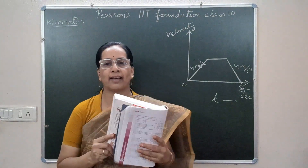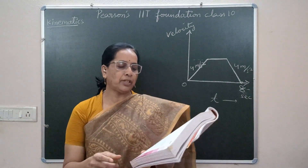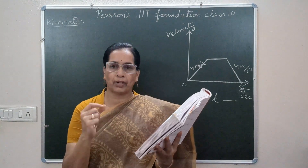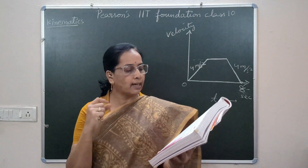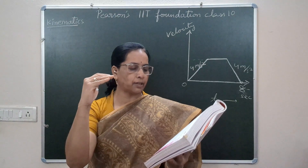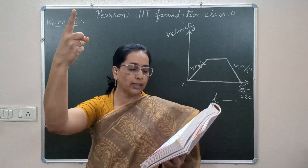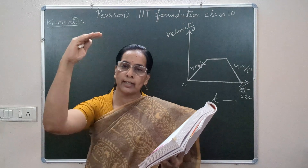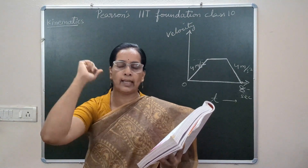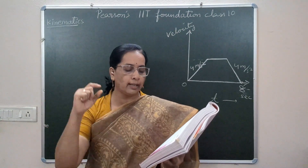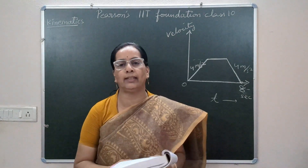In this video, I am answering question number 41 from the Pearson Class 10th IIT Foundation Physics Kinematics chapter, level 2. The question will be typed in the description box. The question says: a lift ascends from rest with uniform acceleration of 4 meter per second square, then moves with uniform velocity, and finally comes to rest with a uniform retardation of 4 meter per second square.